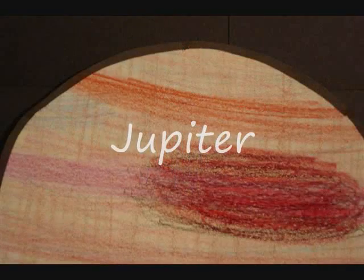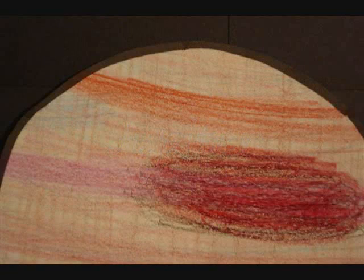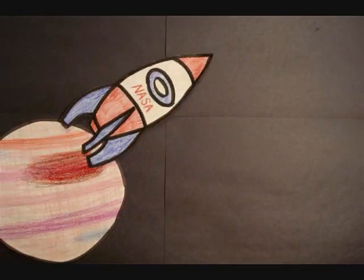Jupiter is our next planet. It is the 5th planet from the sun and is also our largest planet. Jupiter is also gaseous and has 16 moons.